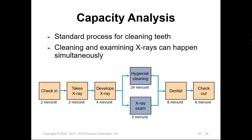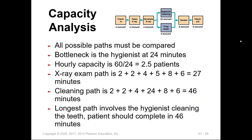This slide shows another example of capacity analysis for a standard teeth-cleaning process. From the analysis, cleaning and examining using x-rays can happen simultaneously. All possible paths must be compared. The bottleneck is the hygienist at 24 minutes, giving an hourly capacity of 60 divided by 24, which is 2.5 patients per hour. The x-ray exam path totals 2+2+4+5+8+6 = 27 minutes, while the cleaning path is 46 minutes. The longest path involves the hygienist cleaning the teeth, completing in 46 minutes.